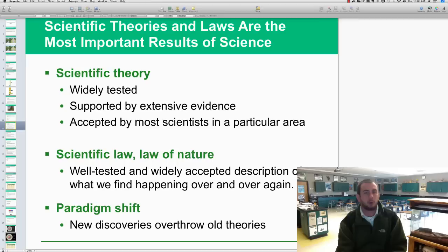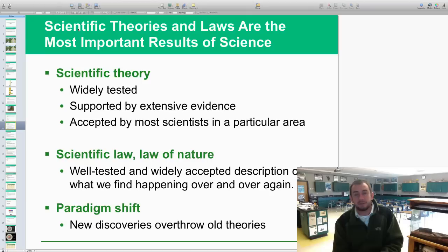Scientific theories and laws are the most important results of science. The theory is a widely tested one supported by extensive evidence by many scientists and accepted by most scientists in that particular field. A scientific law or law of nature is well tested and widely accepted description of what we find happening over and over and over again, like the law of conservation of matter, things like that.